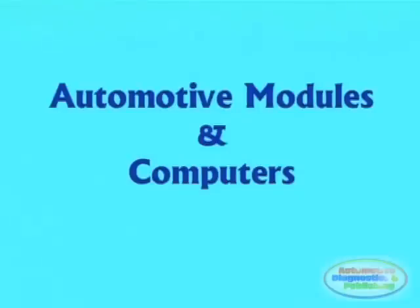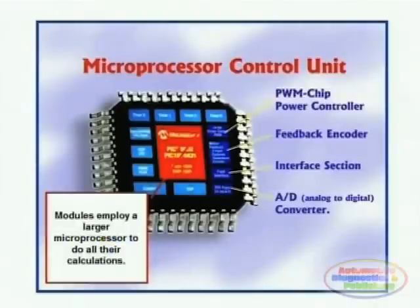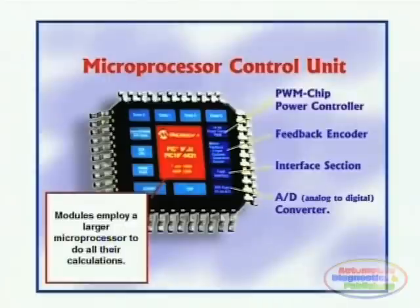A computer module is a larger version of the actual controller. Computer modules are subdivided in much the same way as a smaller controller chip, with a power controller, feedback interface, analog and digital memory, as well as a clock to keep the microprocessor within its time frame. Modules are usually centered around a large and expensive microprocessor unit and run at a much faster rate than the controller.